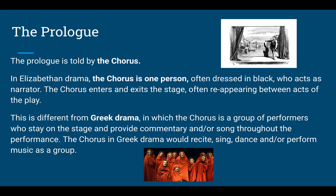The prologue in Romeo and Juliet and in other Shakespeare plays is told by the chorus. Now the chorus, unlike in Greek drama, in Elizabethan drama is just one person. This person is kind of like a narrator. They're often dressed in black, but not always — they can wear costuming that goes with the play or other costumes, though often they do dress in black because they're kind of in the background.